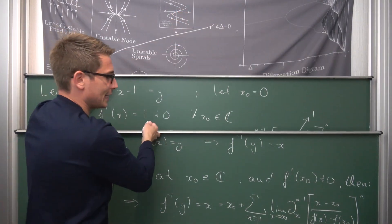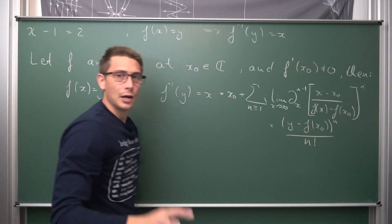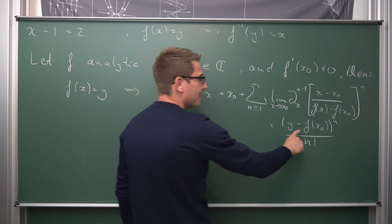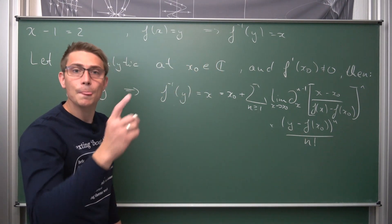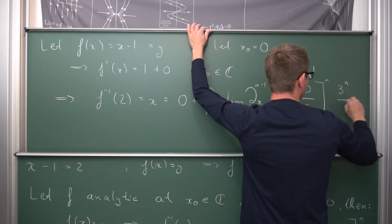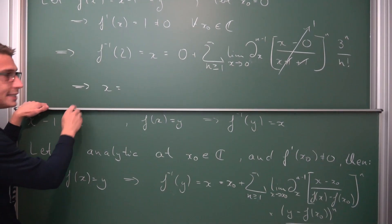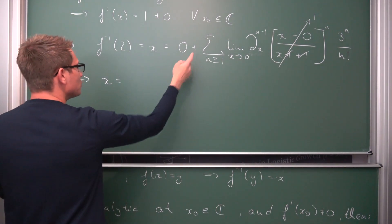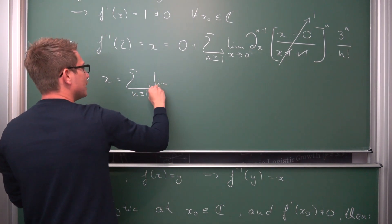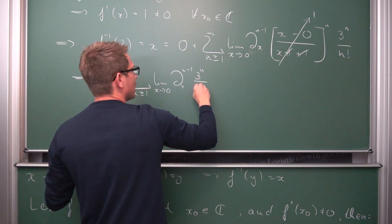Everything inside the residue simplifies to 1. Our solution becomes the infinite series Σ (n ≥ 1) of the limit as x → 0 of the (n−1)-th derivative of 3ⁿ / n!. The integrand has no x-dependence at all, so all derivatives with respect to x vanish for n ≥ 2. The first term (n = 1) is the zeroth derivative — the function itself — of 3¹ / 1! = 3. All subsequent terms vanish. So our answer is 3, which is indeed the solution to x − 1 = 2.